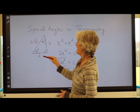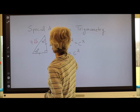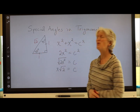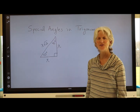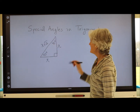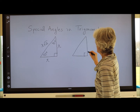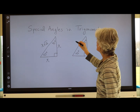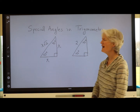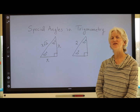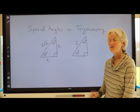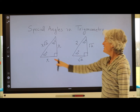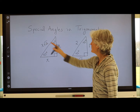If each leg is 1, then the hypotenuse is going to be 1 × √2. Now let's look at another example: what if I told you the hypotenuse was 2 — what would the legs be? The answer is √2, because √2 × √2 = 2.